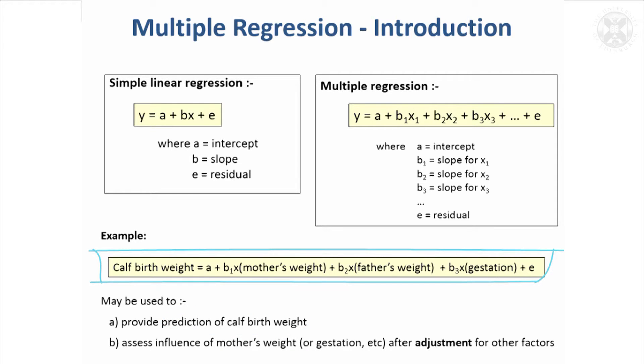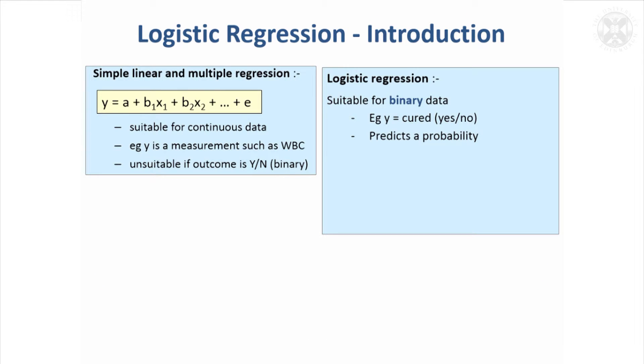Another thing multiple regression is useful for is what's the effect of mother's weight on calf birth weight after taking into account the father's weight and the gestation at which the calf is born. So it has this other role of adjusting your analysis for other potentially confounding factors. But we'll look at that next time. Another type of regression that you may have heard of because it's quite a popular type of regression is logistic regression.